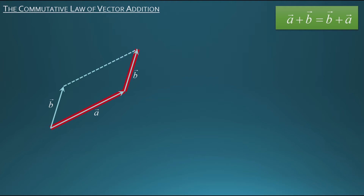And if I do that, I'll get a resultant that looks like this. Now because I started with vector a and added vector b to it, I could call that resultant vector a plus vector b, or simply a plus b.